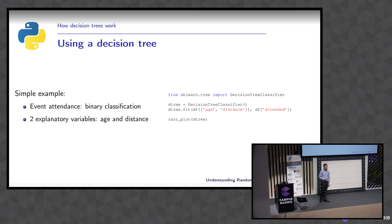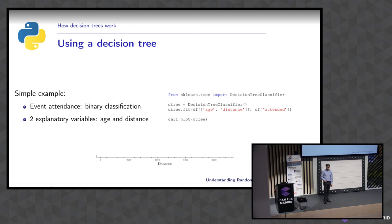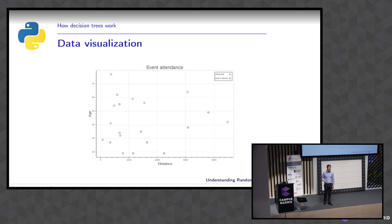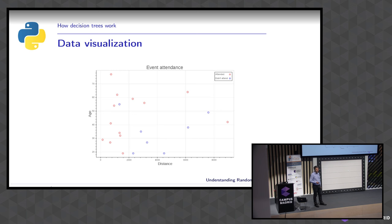We'll start with a really small dataset for event prediction. We have three columns: age and distance of people expected to attend an event, and we want to know whether they will come or not. The distance axis represents how far someone is from the event — I came from London, so I would be on the far side — and this is the age of people.